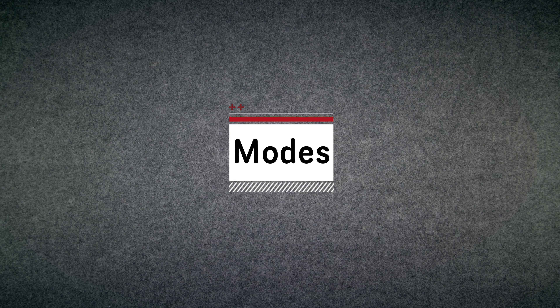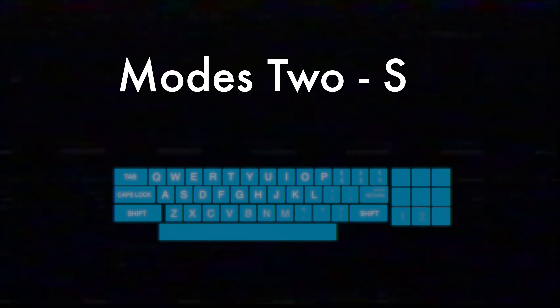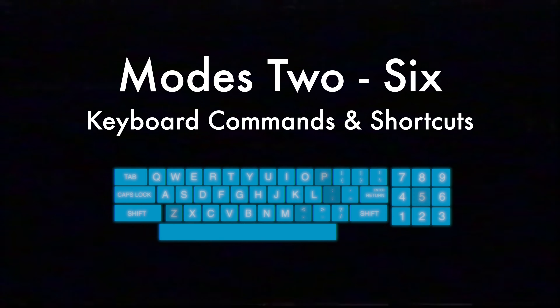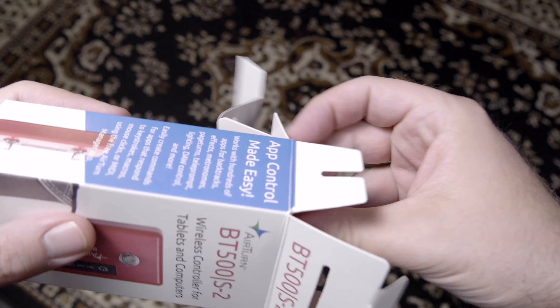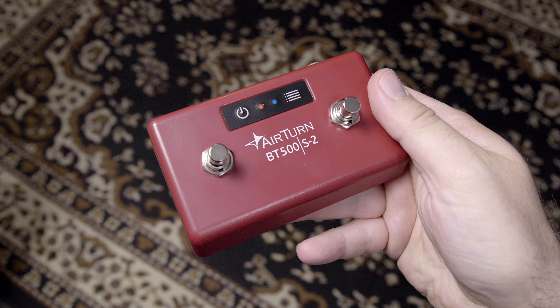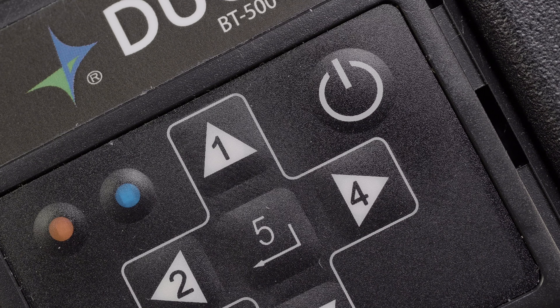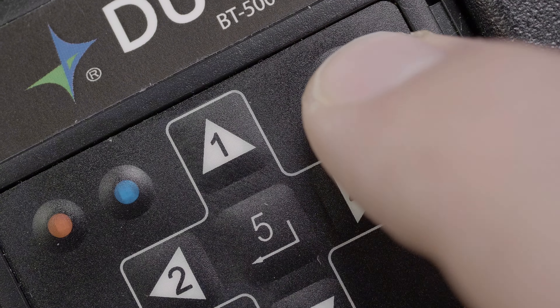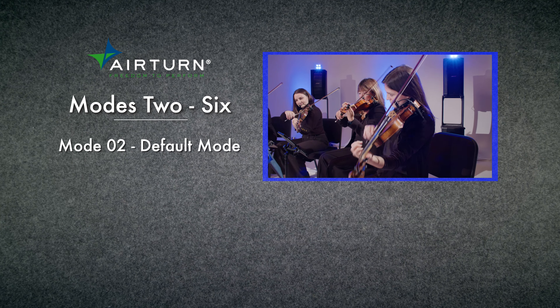It's best to choose a mode designed for the type of app you'll be using. Modes 2 through 6 contain keyboard commands and shortcuts — they work out of the box with most applications. While using one of these modes, you can tap the power button to bring up the virtual keyboard. Mode 2 is the default mode and will turn pages for most music management apps. Mode 3 contains the page control keys, useful for document apps like Adobe or Google Docs.